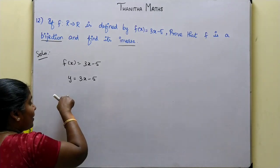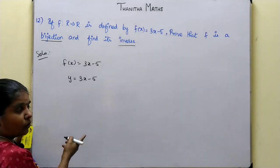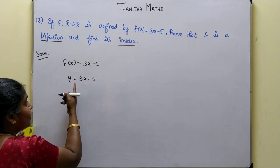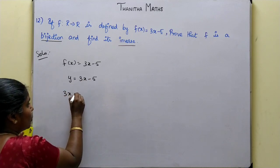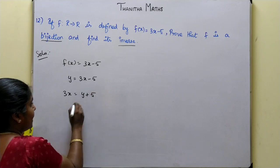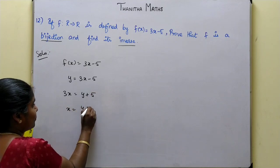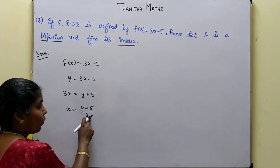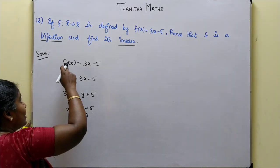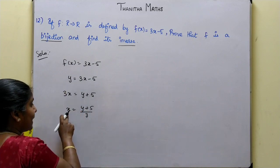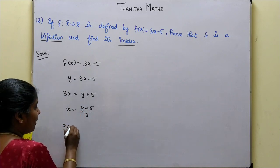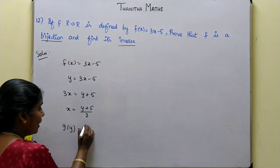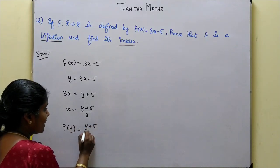Now we will talk about x in terms of y. Here, f of x equals y, so 3x minus 5 equals y. Minus 5 becomes plus 5, so 3x equals y plus 5. Therefore x equals y plus 5 by 3. So g of y is equal to y plus 5 by 3.